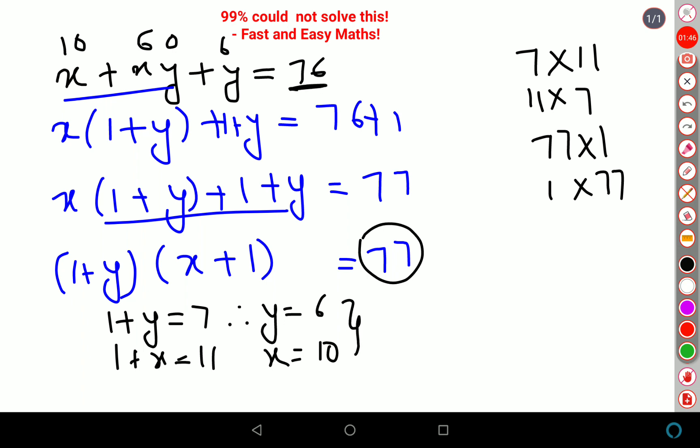So here I can say either x is equal to 10 or x is equal to 6. Either y is equal to 10 or 6. One value will be absolutely okay.